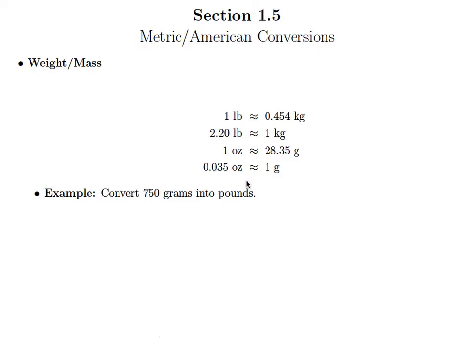Here we're going to do an example of going between the metric and American system with units of weight. So we have a couple equivalencies here, or approximate equivalencies that is, of pounds with kilograms and with ounces and grams.